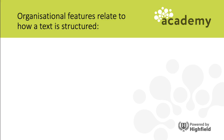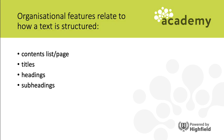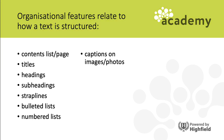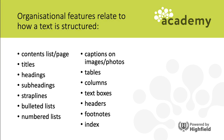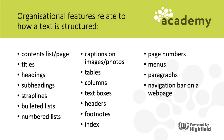Organizational features relate to how a text is structured. Here are a few you might come across: a contents list or contents page, titles, headings, subheadings, straplines, bulleted lists, numbered lists, captions for images or photos, tables, columns, text boxes, headers, footnotes, an index page, page numbers, menus, paragraphs, a navigation bar on a website, email headers, and a glossary.